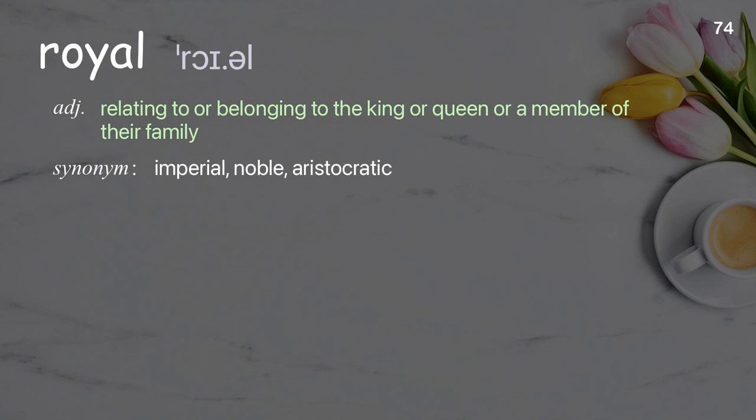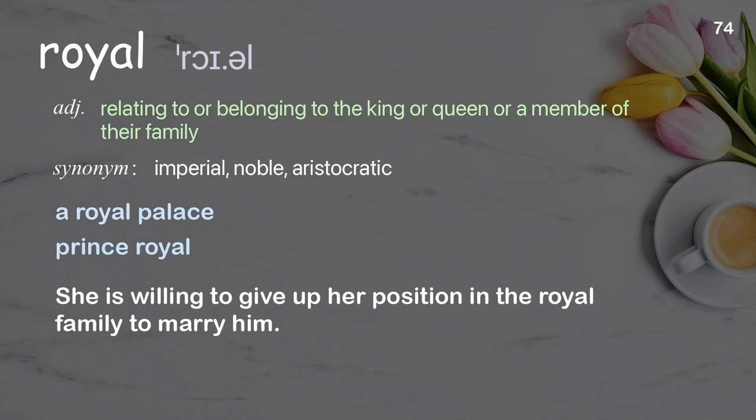Royal: Relating to or belonging to the king or queen or a member of their family. Examples: a royal palace, prince royal. She is willing to give up her position in the royal family to marry him.